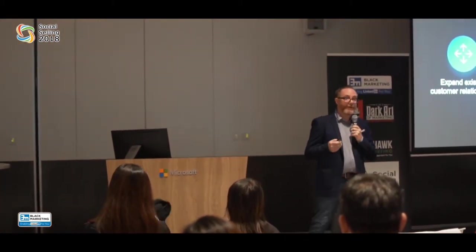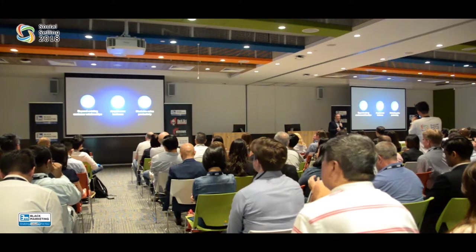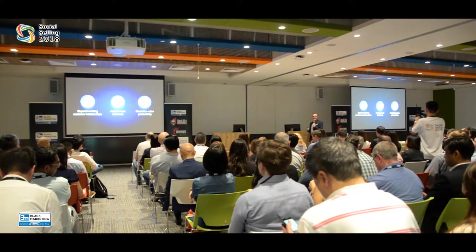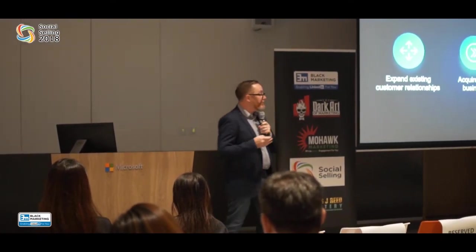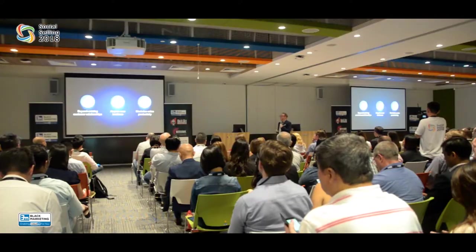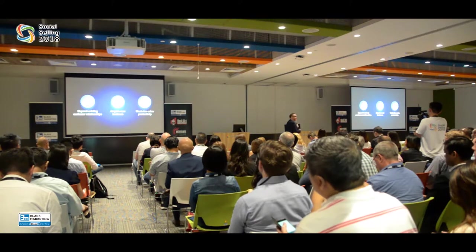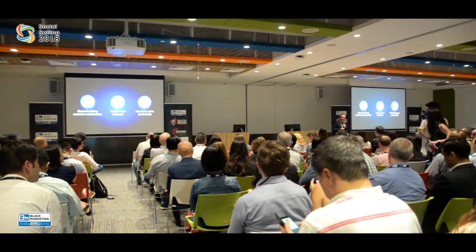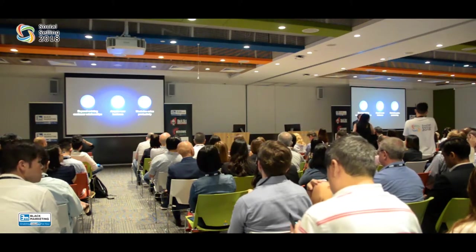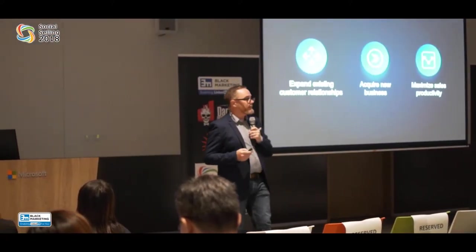The value to be found in jumping on this curve is pretty simple. First: expanding your existing relationships. If you have relationships, recognise that knowing one person in a business is no longer enough. Businesses on average have up to 6.7 people involved in every B2B business decision — that's a lot of decision makers to cover. Being able to expand existing relationships into new ones is fantastic. Second: acquiring new business. You need to acquire new relationships to acquire new business. The automation of spray and pray is not how you build a relationship. And finally, the part that pulls it all together: maximizing the productivity of doing so.